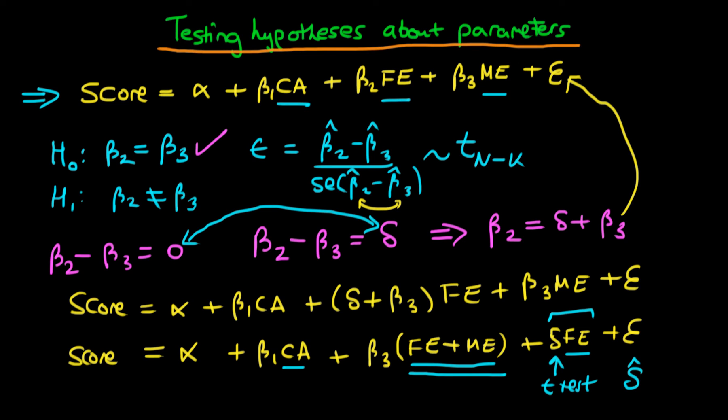And this process is easily extendable to more complicated hypotheses or linear hypotheses. So let's say we had that beta2 was equal to beta3 plus beta1. Then we could just assume that beta2 minus beta3 minus beta1 must be equal to delta. And then we just substitute it into the above model, and that would tell us what our independent variables would need to be in the regression.